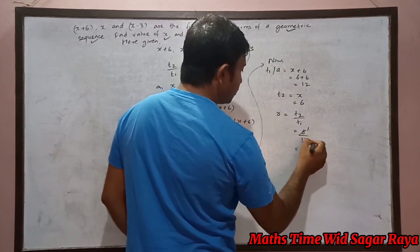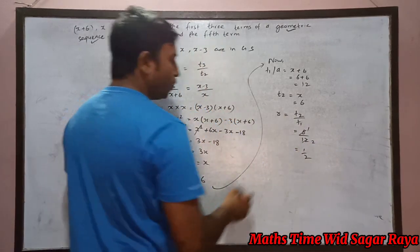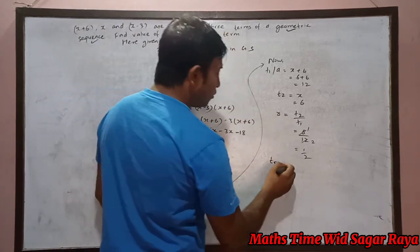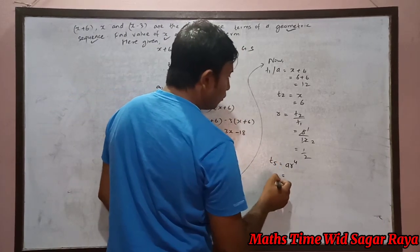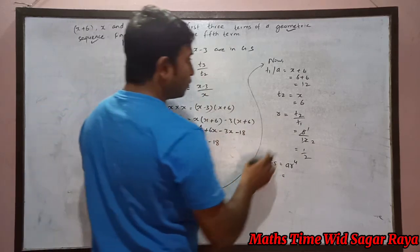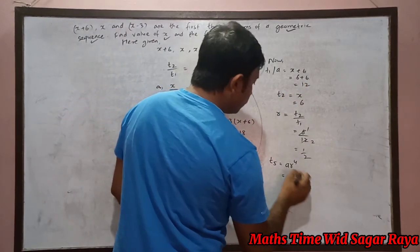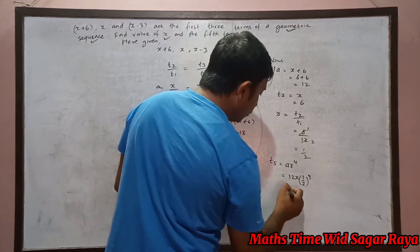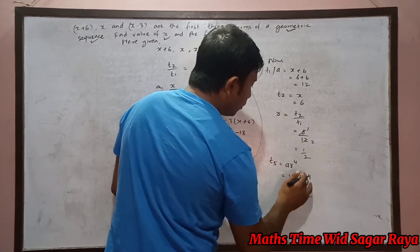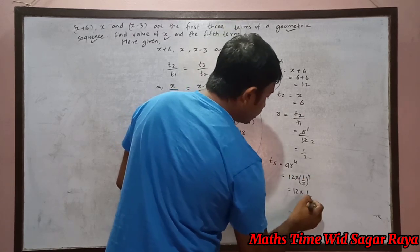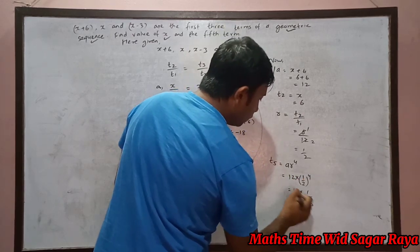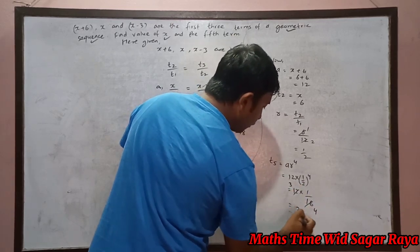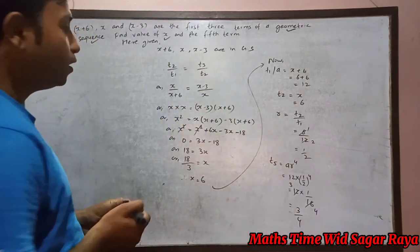Now let's find the fifth term. Fifth term formula is a times r power 4. What is the value of a? 12 times r power 4 means 1 by 2 power 4. So 12 times 1 power 4 is 1, 2 power 4 is 16. 4 threes are 12, 4 fours are 16, so our answer is 3 by 4.